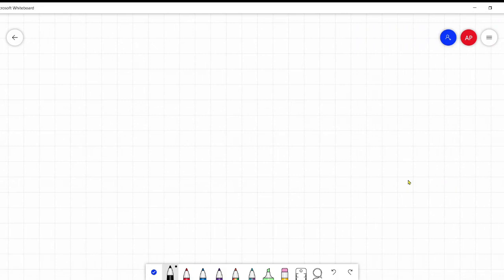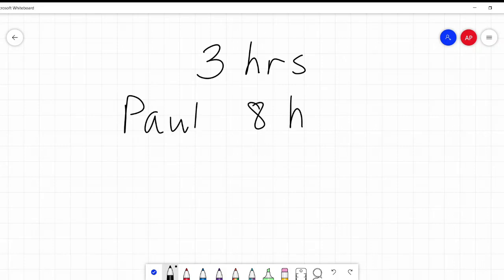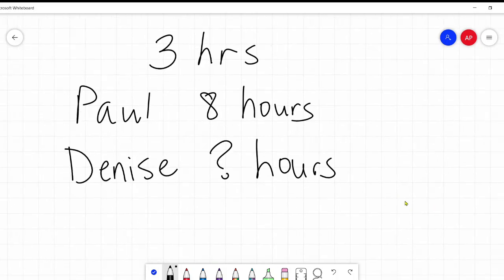Now what if it's the other way. What if they told us to complete this task working together, it takes them three hours. Okay. So working together three hours and then Paul working alone takes eight hours. And then we'll say, Denise working alone takes how many hours? If when she works with Paul, it takes three.